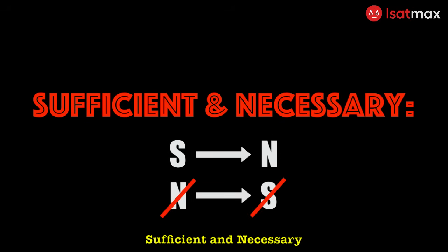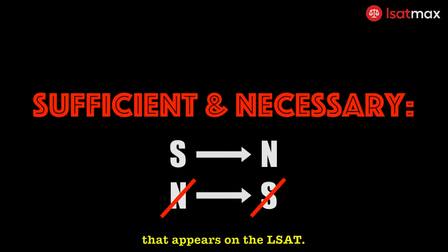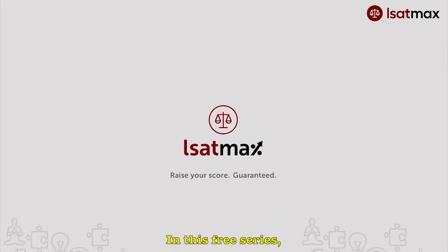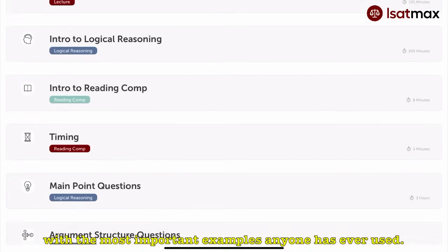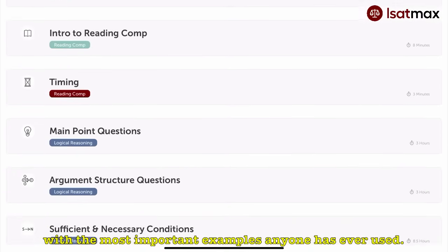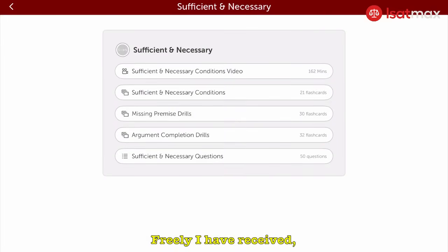Sufficient and necessary is the most commonly tested form of reasoning that appears on the LSAT. In this free series, we will review this concept of formal logic with the most important examples anyone has ever used. Freely I have received, so freely I give. Hallelujah.